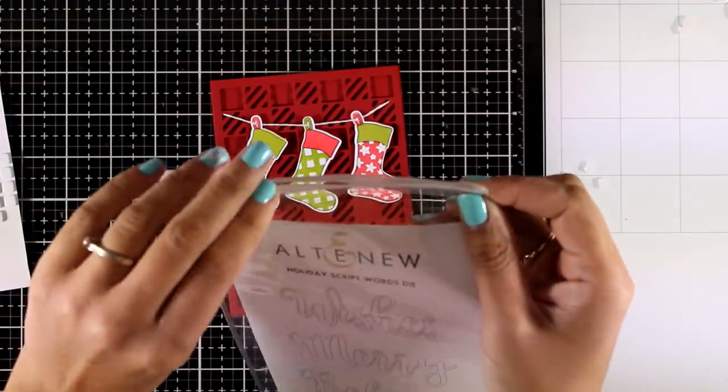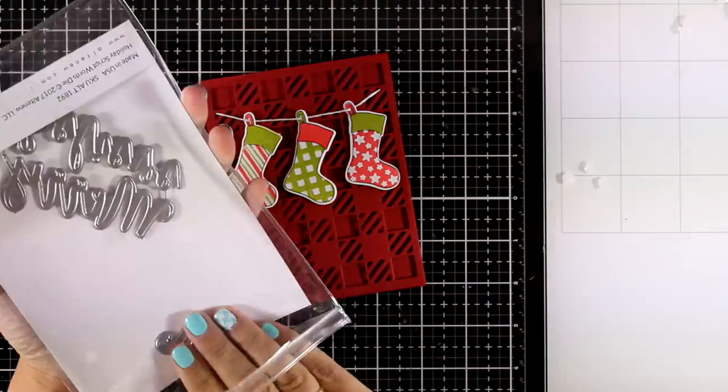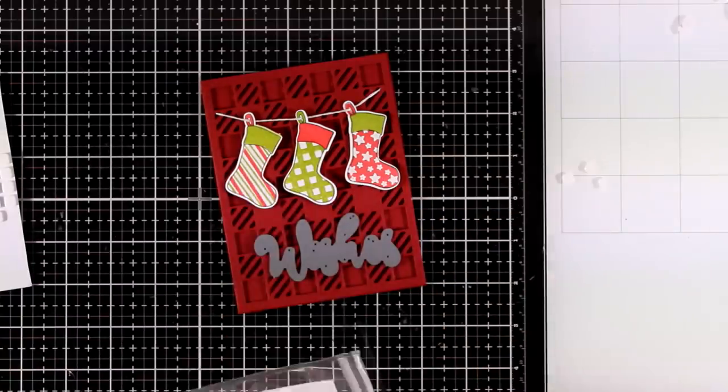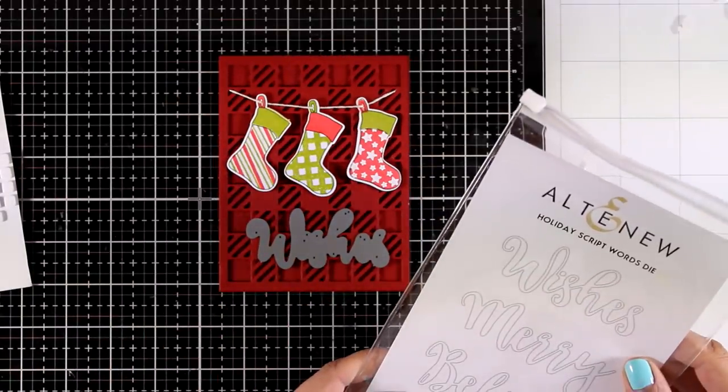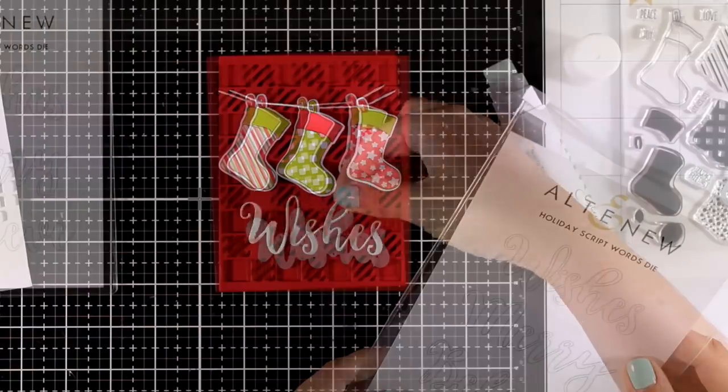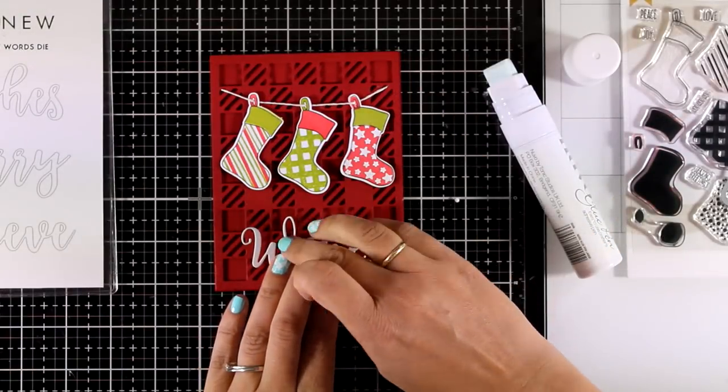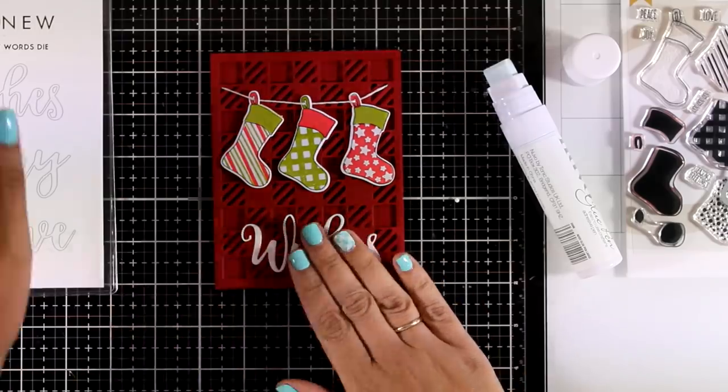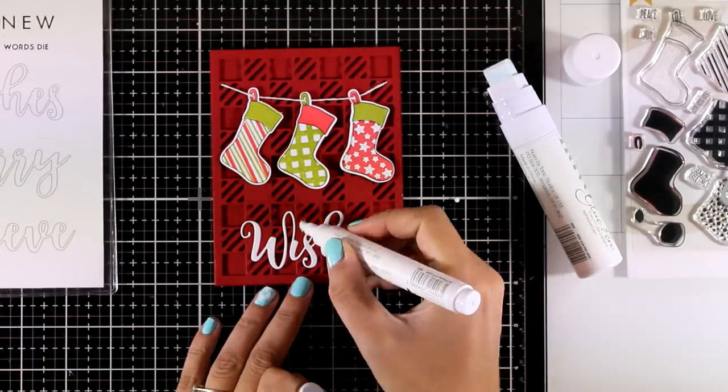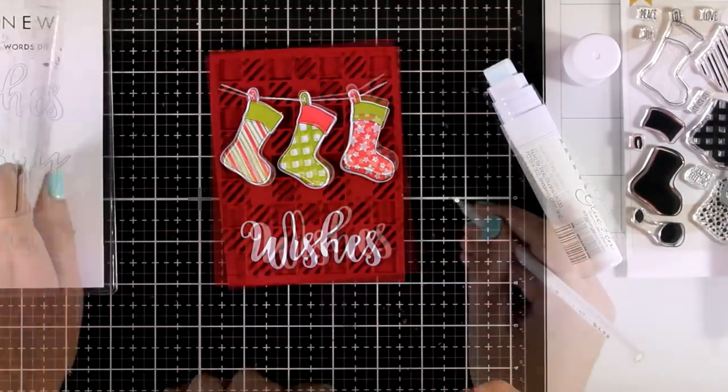Now I am going to use a die cut word as my sentiment and this is the word 'wishes' from the Holiday Script dies. I used white cardstock to cut it out and I'm sticking everything down with my Nouveau glue pens and I'm also going to add the little dot on top of the i.